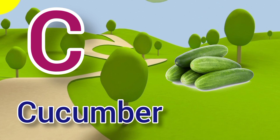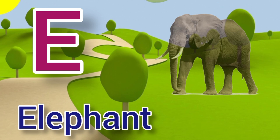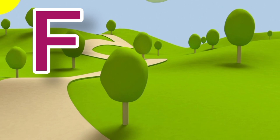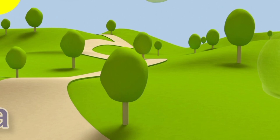D for dolphin, dolphin means dolphin. E for elephant, elephant means hathi. F for frog, frog means medak. G for guava, guava means amrood.